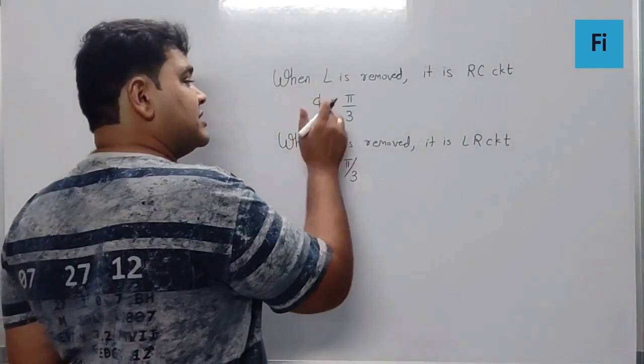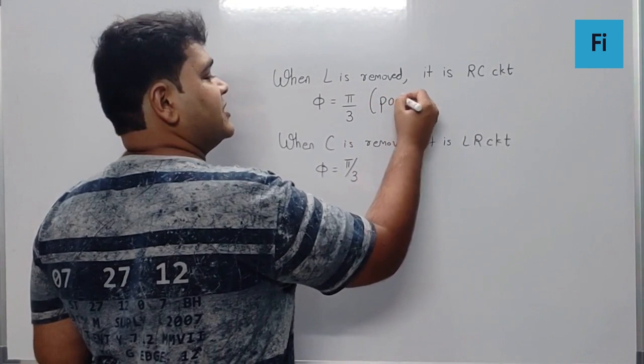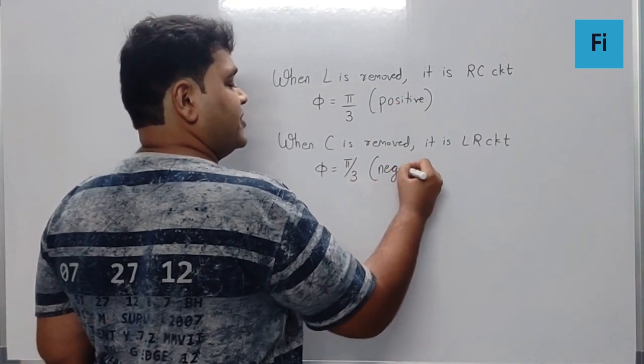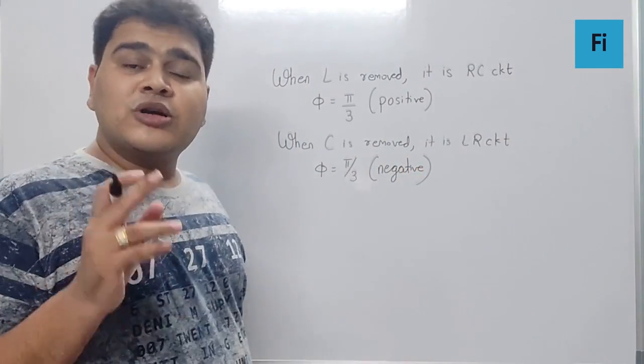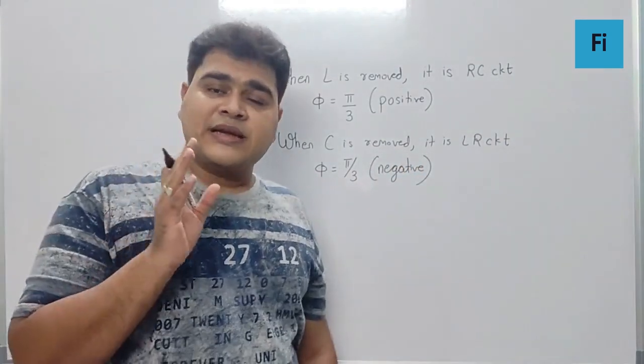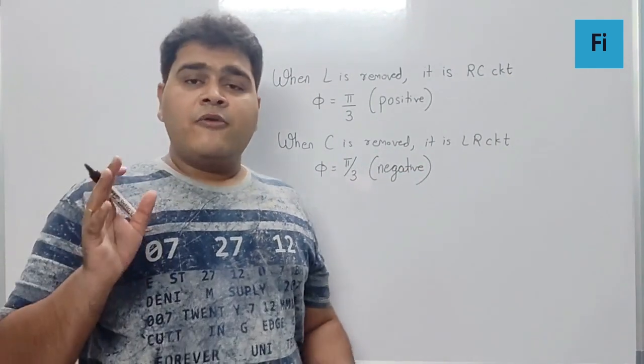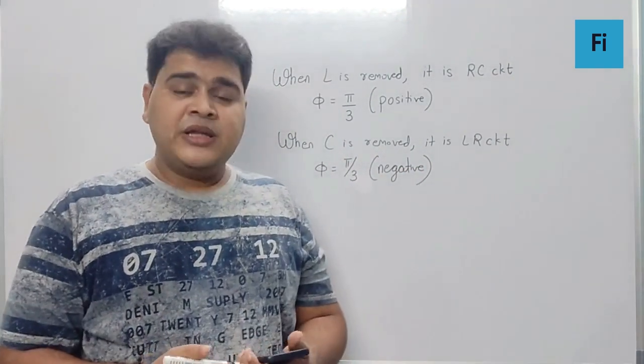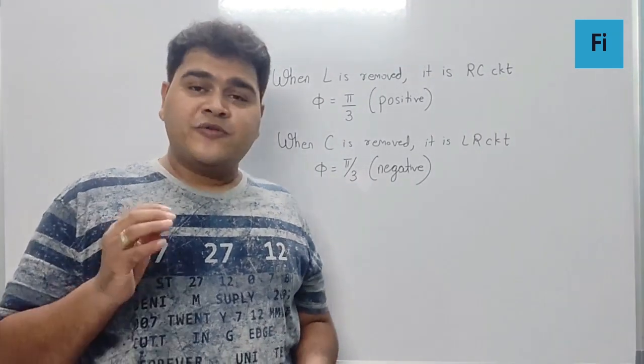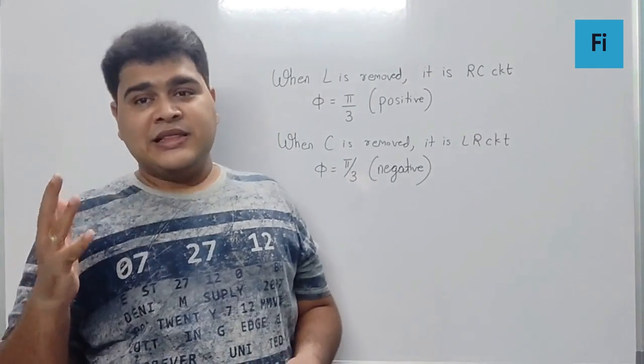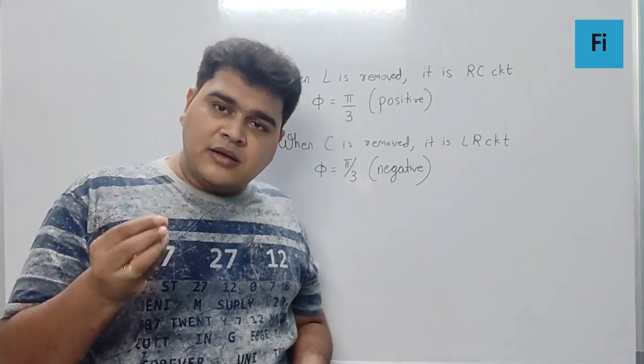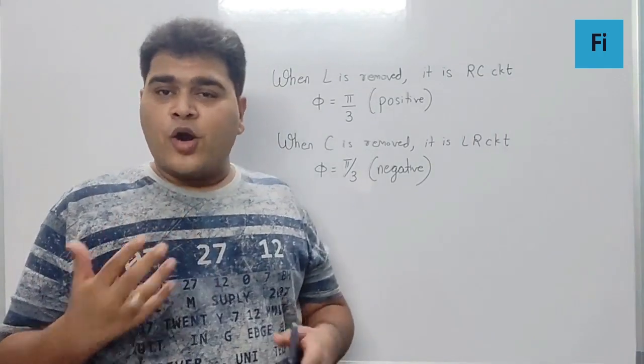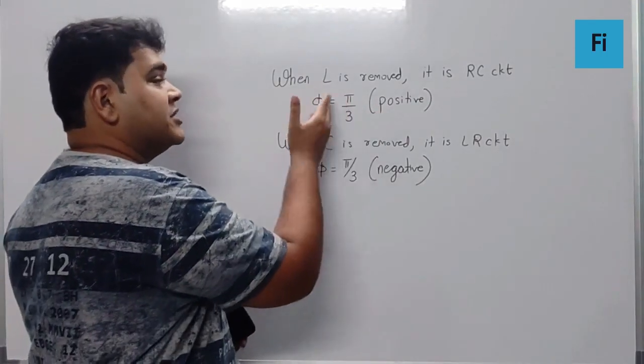So definitely you need to understand that if in this case the phase difference is taken as positive, then in this case the phase difference has to be negative, because C and L - the capacitance and the inductance - behave exactly in the opposite direction in terms of phase. If in capacitance the current lags, in the inductance the current will lead. So accordingly, for the first, if the phase difference is positive, for the second the phase difference has to be negative.